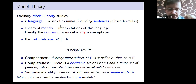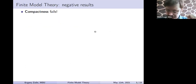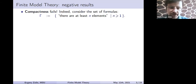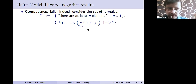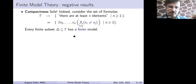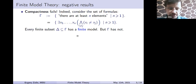Some answers are surprising. Compactness fails — we already know this because we can write an infinite set of formulas where each formula says there are at least N elements. Every finite subset of this set of formulas is satisfiable in the class of finite models, so there is a finite model for any finite subset. But the whole set gamma is not satisfiable in the class of finite models, because it would need at least N elements for every N.